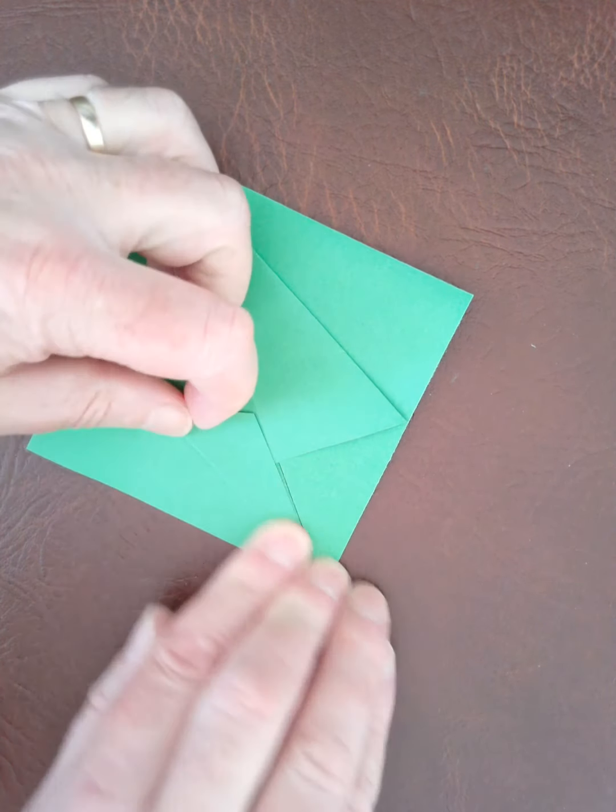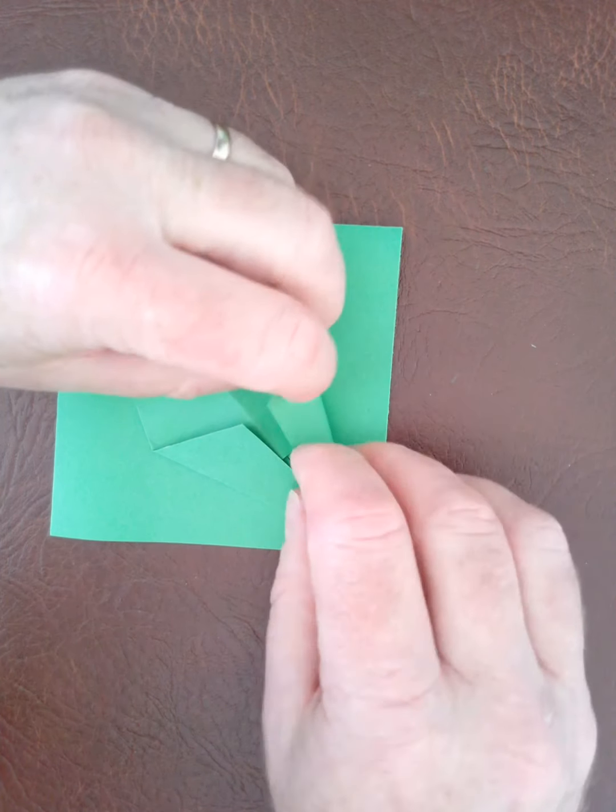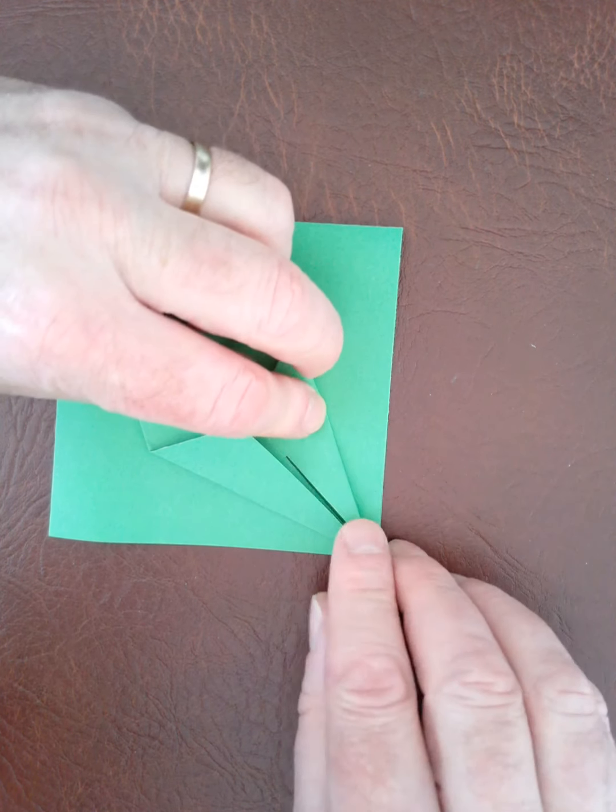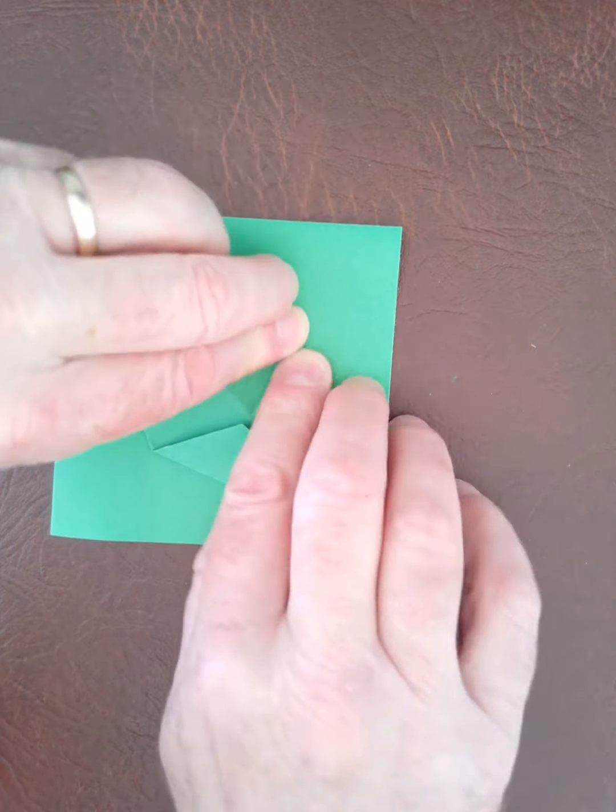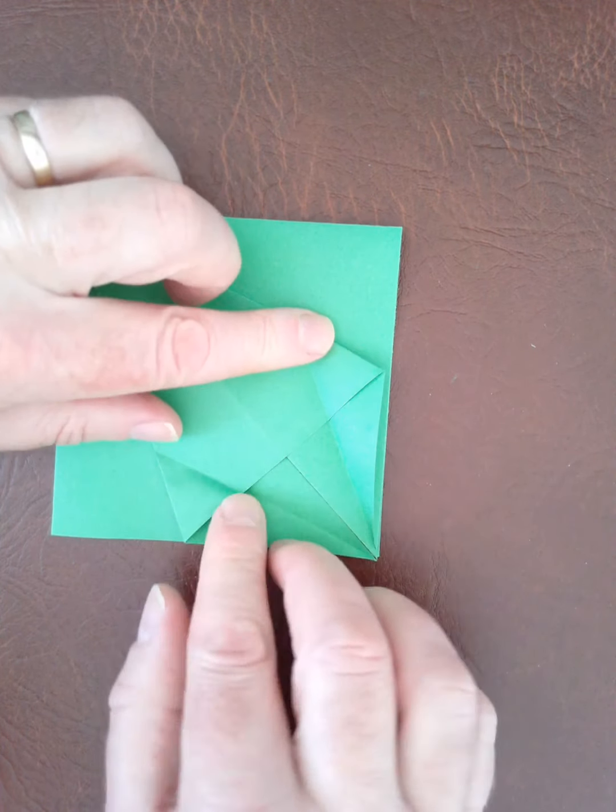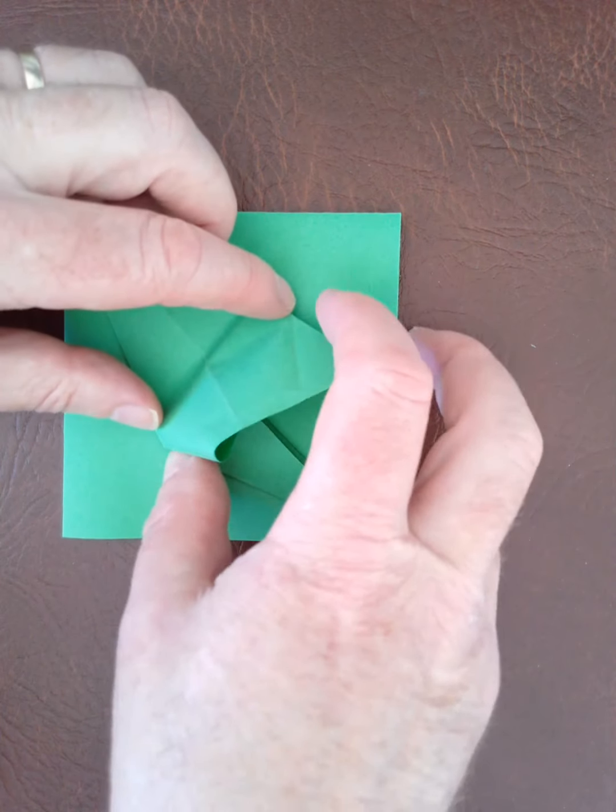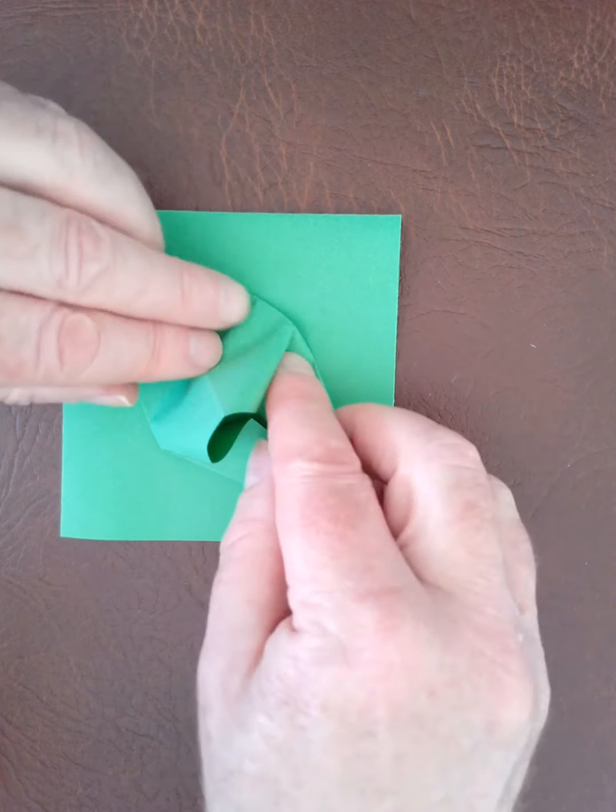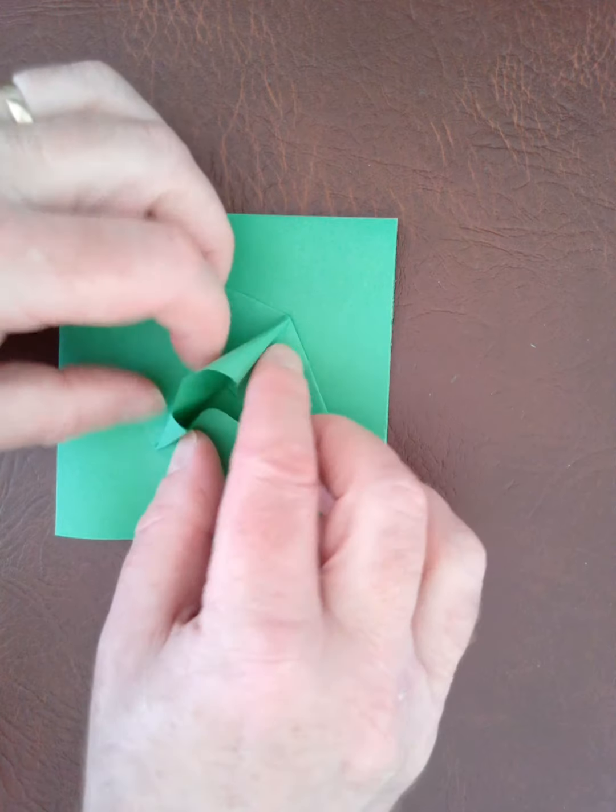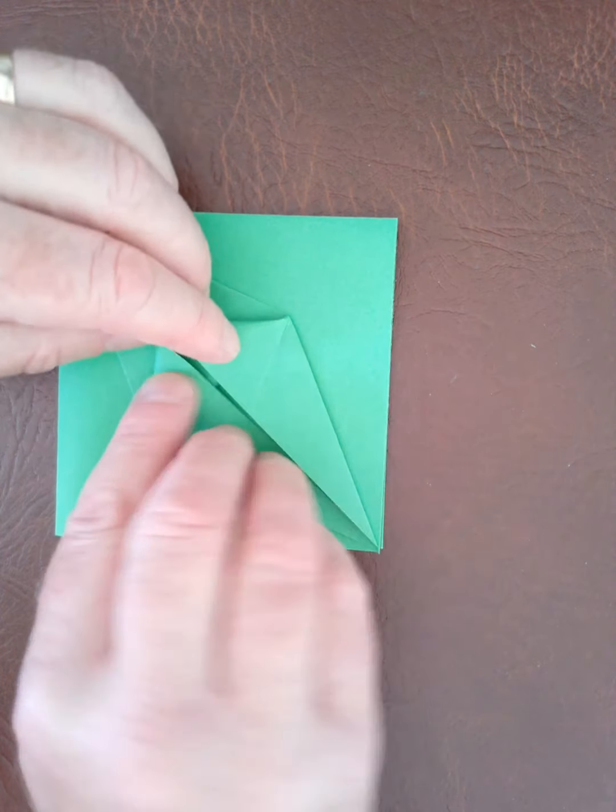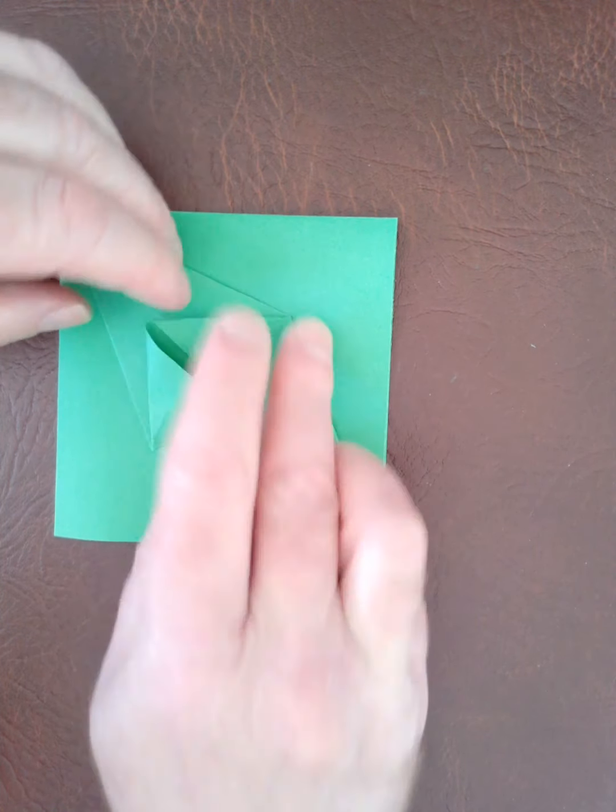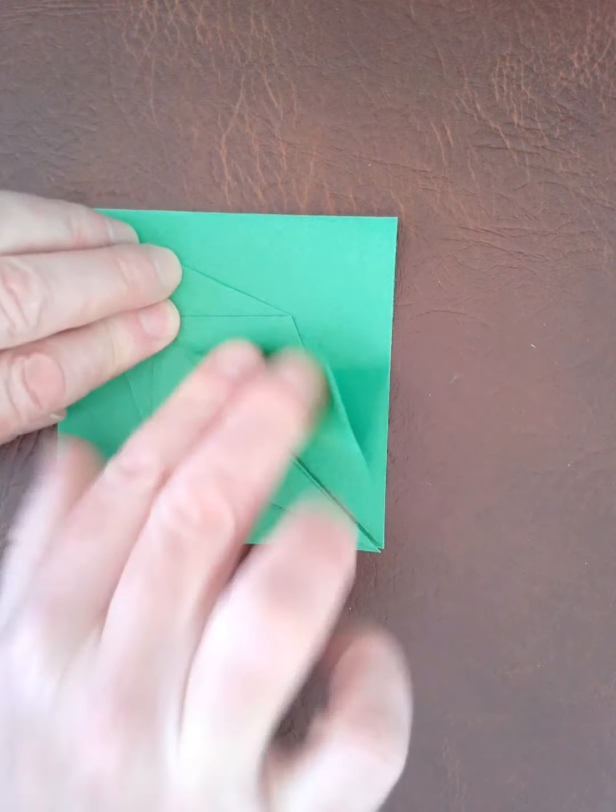Do the same on the other side and then take that flap and fold it back up. This is probably the trickiest bit just to get that right, so just fold it up like that, take your time and eventually you should find that pulls back like that.